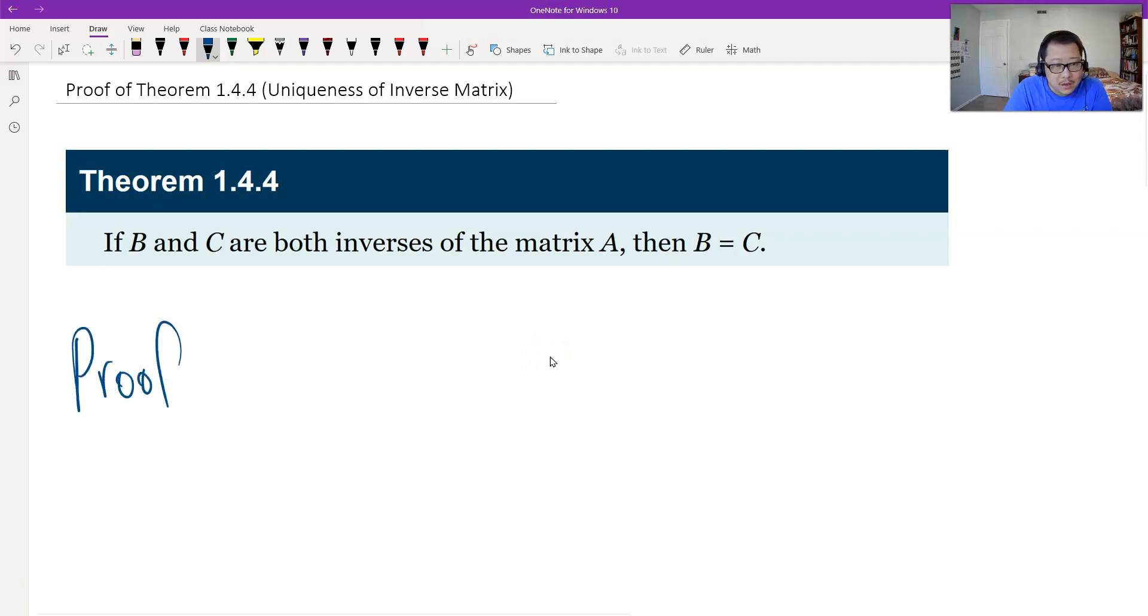All we need is the definition. B is the inverse, therefore B times A equals I. And C is the inverse of A, so A times C also equals I.